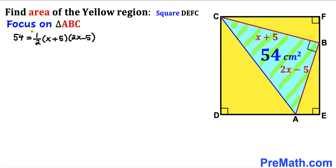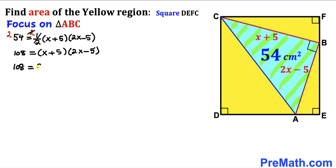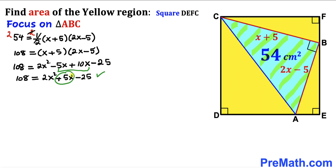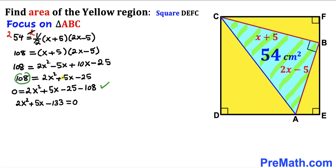Multiplying both sides by 2 to eliminate the fraction gives 108 = (x + 5)(2x − 5). Expanding by double distribution: 108 = 2x² − 5x + 10x − 25. Combining like terms gives 108 = 2x² + 5x − 25. Moving 108 to the right side gives 0 = 2x² + 5x − 133, and combining yields 2x² + 5x − 133 = 0.